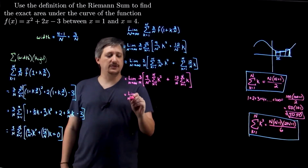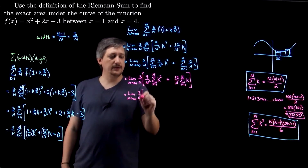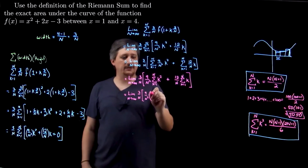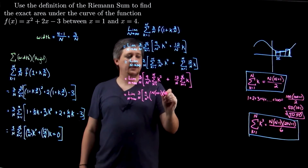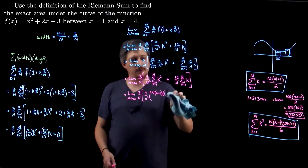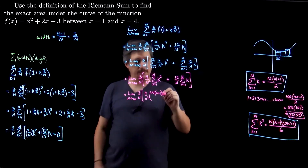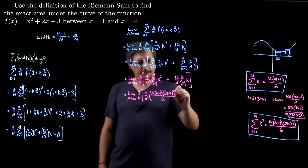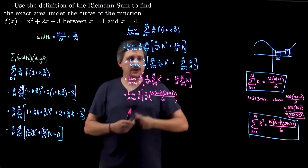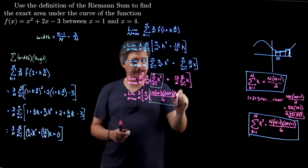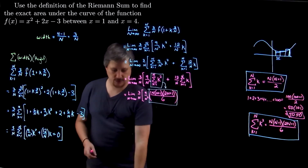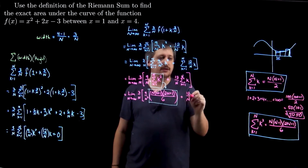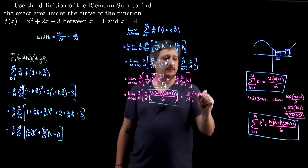Using those two formulas, I now have the limit as N goes to infinity of three over N, then nine over N squared times N times (N plus one) times (two N plus one) over six, plus twelve over N times N times (N plus one) over two. This is the key step — from here to here is where going from sum notation to closed forms makes the limit computable. Everything else is just algebra.